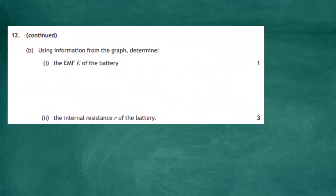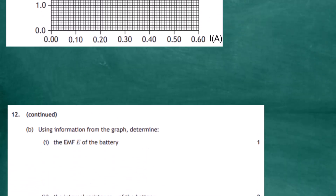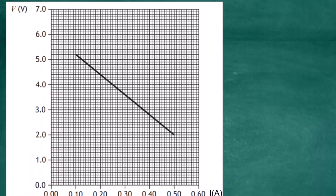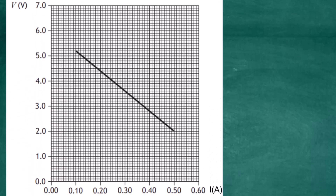Question 12 continued, Part b: using information from the graph, determine part i the EMF of the battery for one mark, and part ii the internal resistance r of the battery for three marks. Looking at the graph, the x-axis shows current measured in amps from zero to 0.6, and the y-axis shows the terminal potential difference measured in volts.